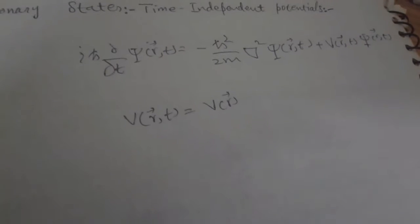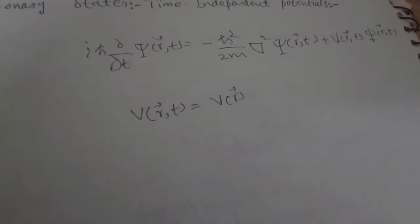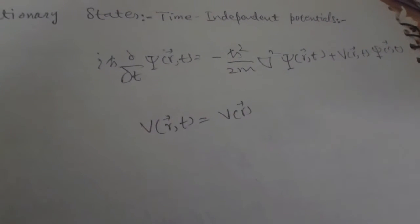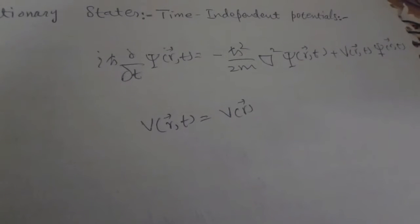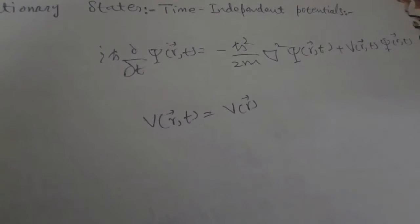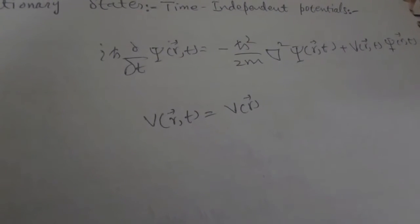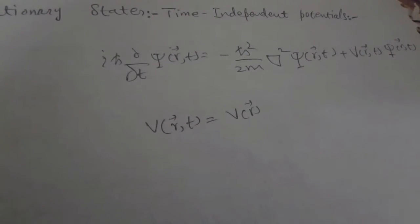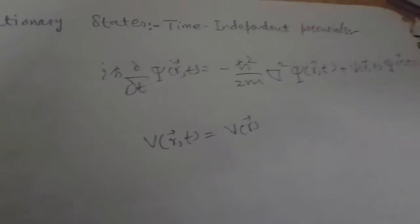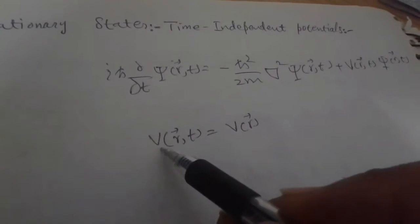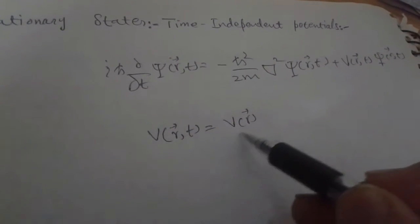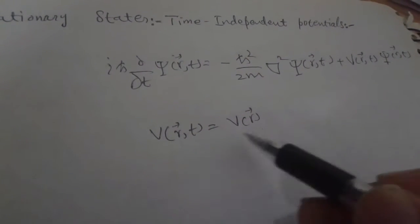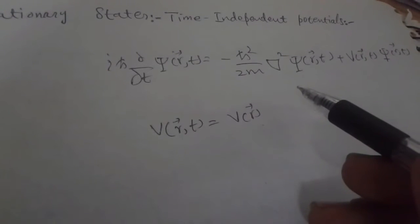But for a special case, we say that the potential in this equation depends only on the value of r instead of time t — so they are time-independent potentials. We can write V(r,t) = V(r), not t, because it is independent of time.